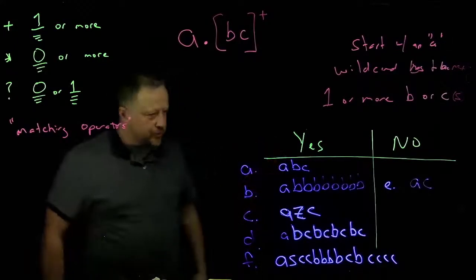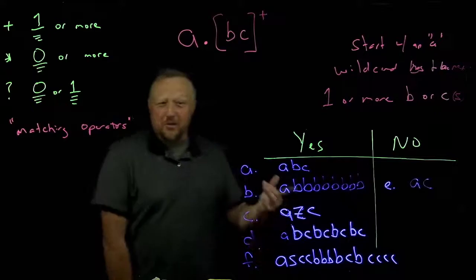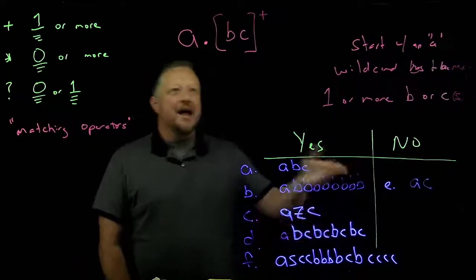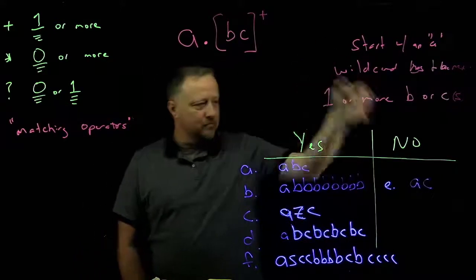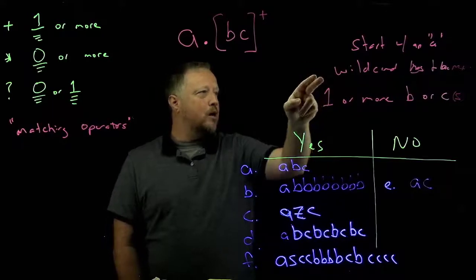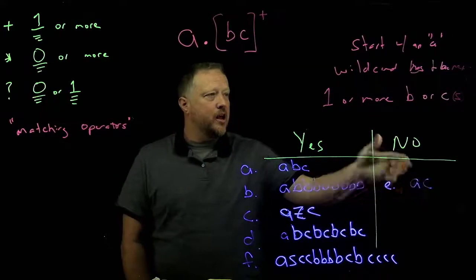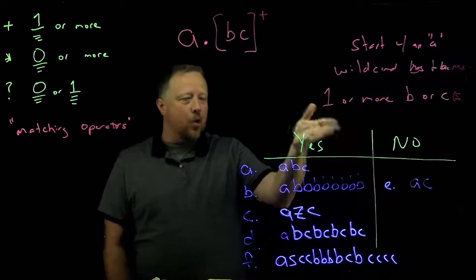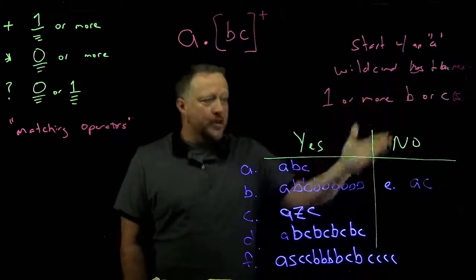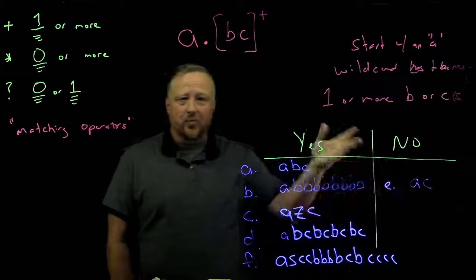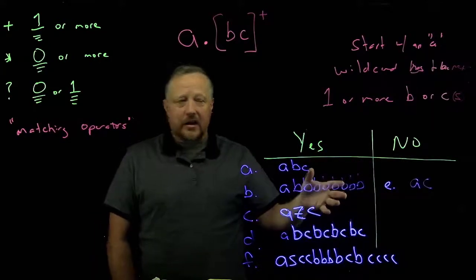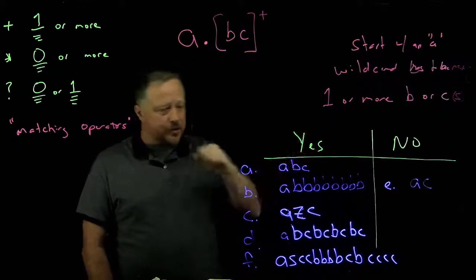Here's our yeses and nos for this one. So I'm going to start with no because there's only one. So A has got to start with an A. Wild card can be anything next, which could be C. But we need that last part, which is one or more B or C. So I really just needed one more character after that, and it would have been fine. So that's why that one's a no.